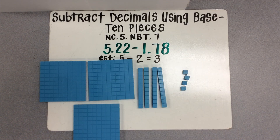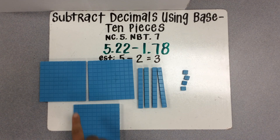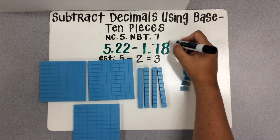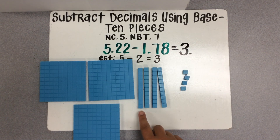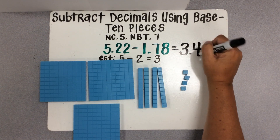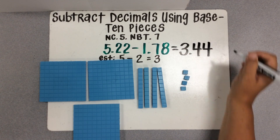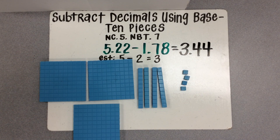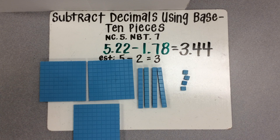So now I have subtracted 1 whole, 7 tenths, and 8 hundredths from 5 and 22 hundredths. All I need to do now is check to see how much is left and I'll know the difference. I see that we have 3 wholes left, 4 tenths, and 4 hundredths. So this tells me that the difference between 5 and 22 hundredths and 1 and 78 hundredths is 3 and 44 hundredths. I know that answer is reasonable based on our estimate — we thought our answer would be around 3, and 3 and 44 hundredths definitely is. This is how we can subtract decimals using the base 10 pieces.